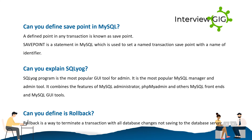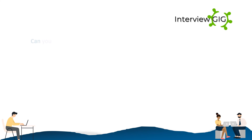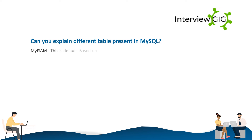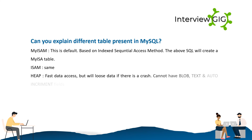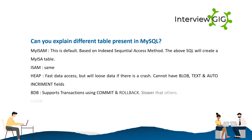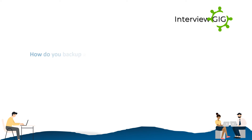Different table types in MySQL: MyISAM is the default, based on Indexed Sequential Access Method. ISAM is same. HEAP provides fast data access but will lose data if there is a crash; cannot have BLOB, TEXT, and auto increment fields. BDB supports transactions using COMMIT and ROLLBACK but is slower than others. InnoDB is same as BDB.